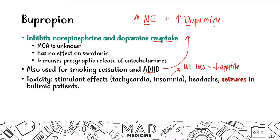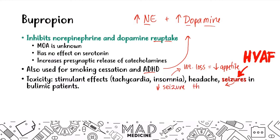The highest-yield thing about bupropion — other than its mechanism — is that when you give bupropion to a patient who is bulimic or anorexic, you can induce seizures. Bupropion lowers the seizure threshold, and patients with anorexia or bulimia already have a decreased seizure threshold, putting them at a higher risk of developing seizures. This is an unfavorable side effect you'll likely see on board questions.